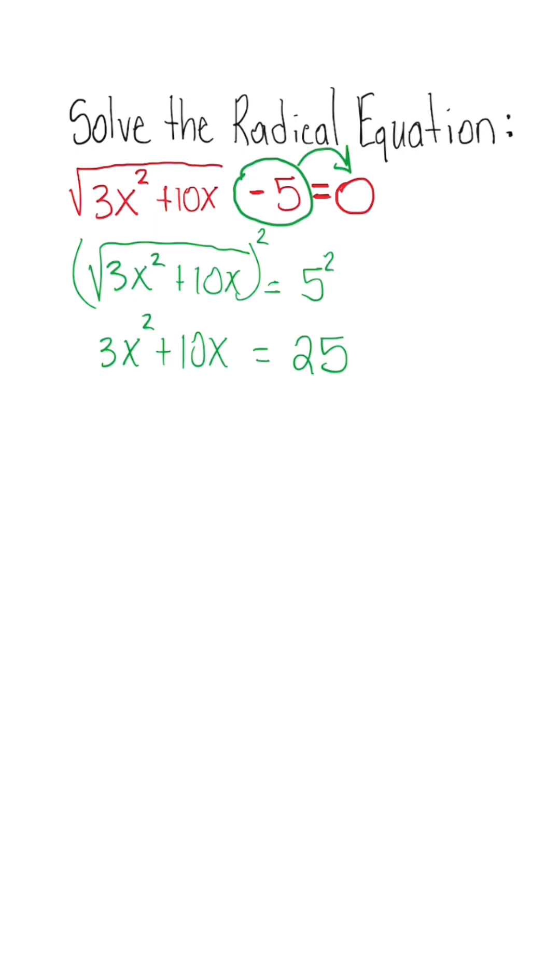Now we're going to bring 25 over and set the equation equal to 0. So we have 3x squared plus 10x minus 25 equals 0. This is what we're focusing on factoring.